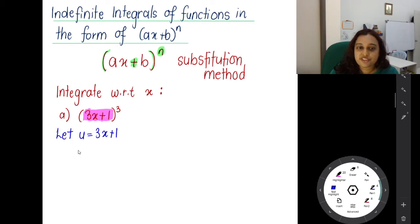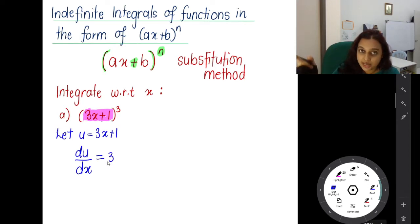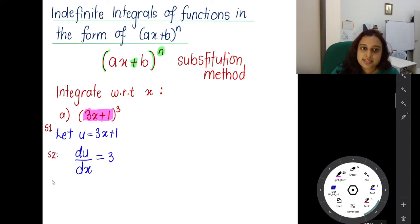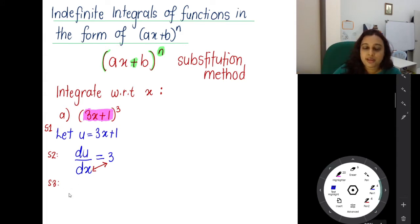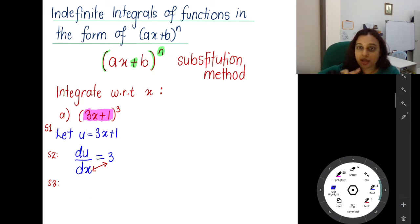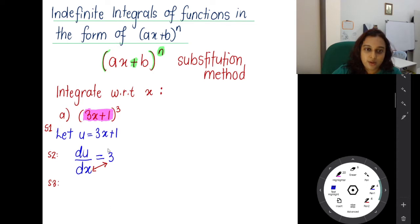So now let's do the substitution method. Step 1: let u equal whatever is inside the bracket — so u = 3x + 1. Step 2: differentiate u with respect to x. So du/dx equals 3. Step 3: reverse the position of dx and the 3. So it becomes du over 3 equals dx. This third step is very important.